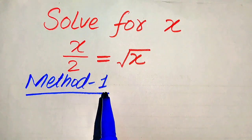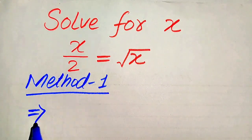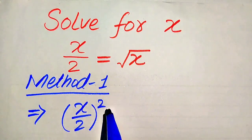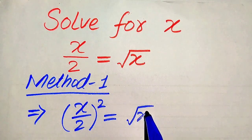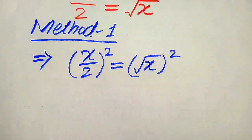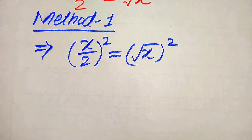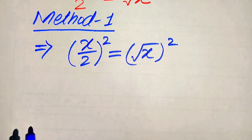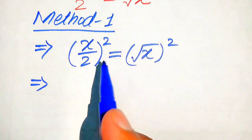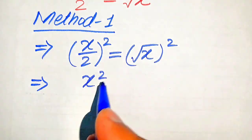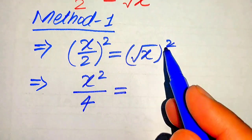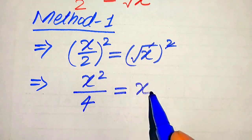To eliminate the square root, we take the squaring on both sides. So when we square both sides, it is written as (x/2)² equals (√x)². We know the rule of squaring a fraction — we apply the square on both terms separately. When we apply the square on x it becomes x², when we apply the square on 2 it becomes 4, and the square root on the right side cancels, giving us just x.